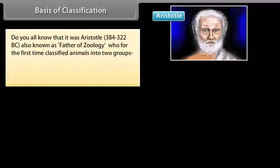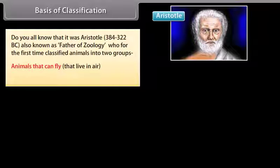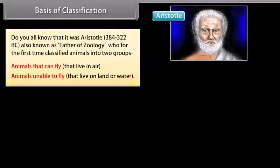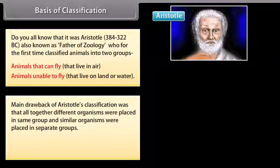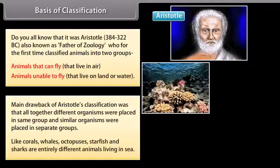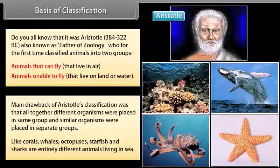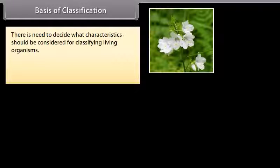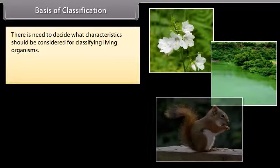Aristotle (384 to 322 B.C.), also known as father of zoology, was the first to classify animals into two groups: animals that can fly and live in air, and animals unable to fly that live on land or water. The main drawback of Aristotle's classification was that altogether different organisms were placed in the same group and similar organisms were placed in separate groups — like corals, whales, octopuses, starfish and sharks are entirely different animals yet all living in the sea. So there is need to decide what characteristics should be considered for classifying living organisms.